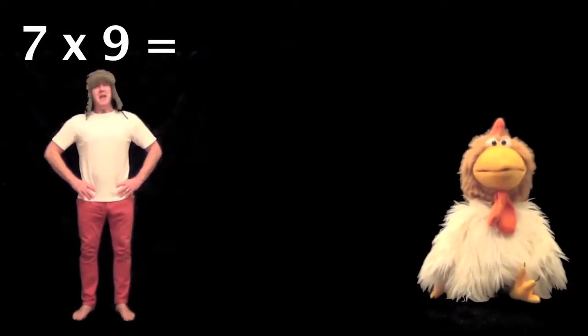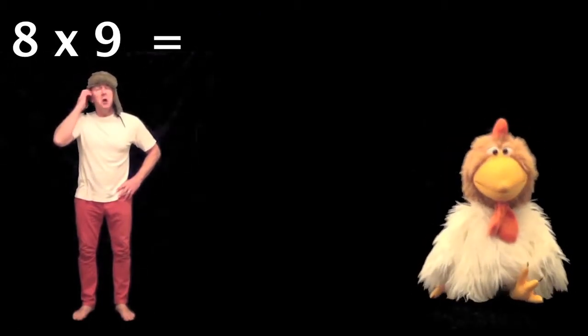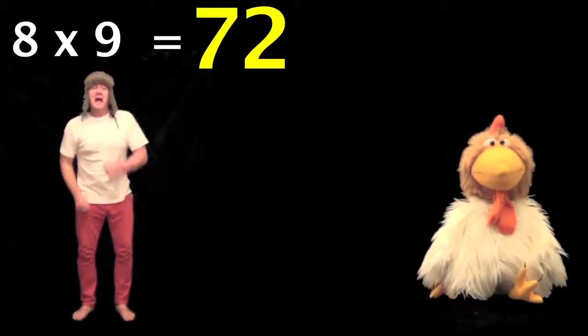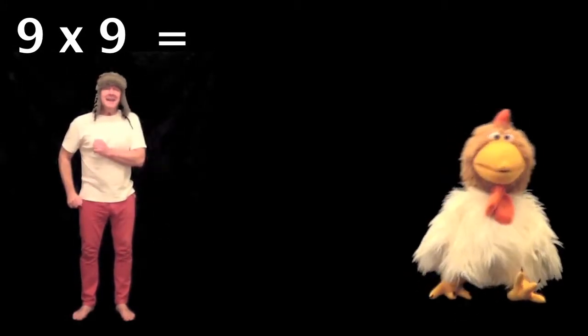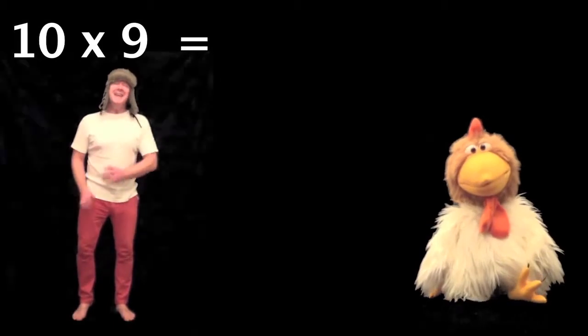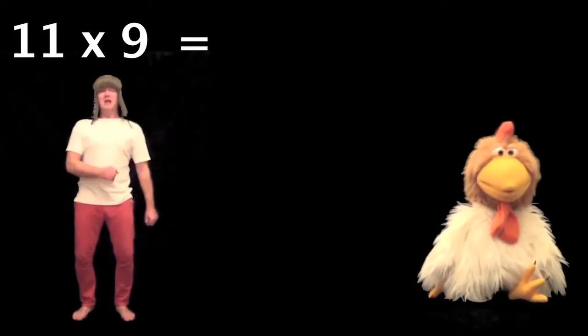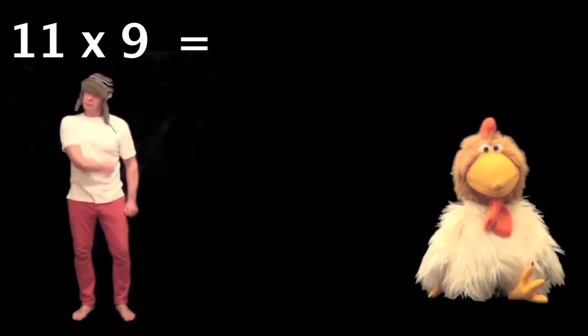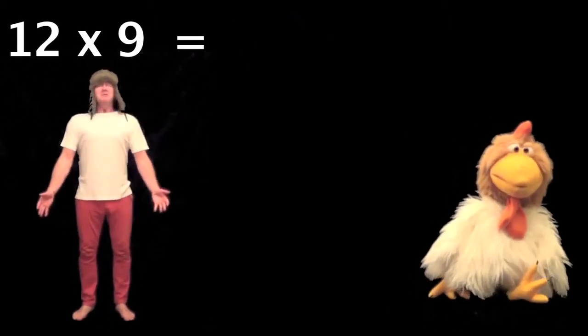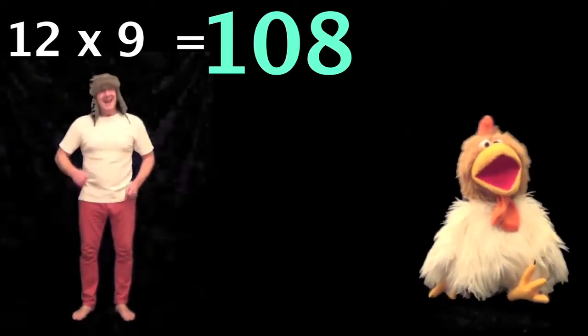7 times 9 is 64... 63, 8 x 9 is 72, 9 x 9 is 81, 10 x 9 is 90, 11 x 9 is 99, 12 x 9 is 108.